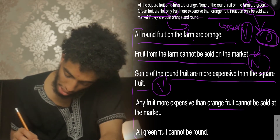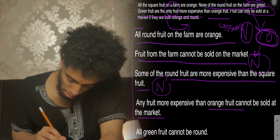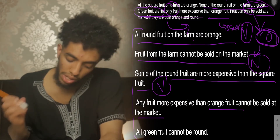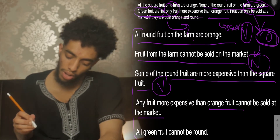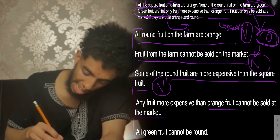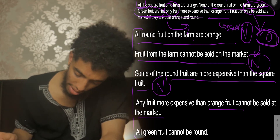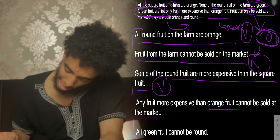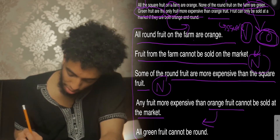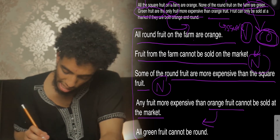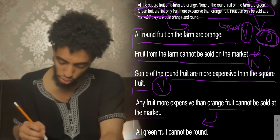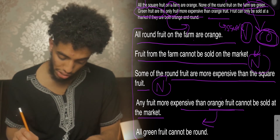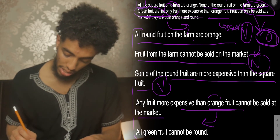Next: 'Any fruit more expensive than the orange fruit cannot be sold in the market.' We know any fruit sold in the market has to be a green fruit. The square fruits on the farm are all orange — that's another clarifier. So by that logic, nothing that can be green can be sold there.